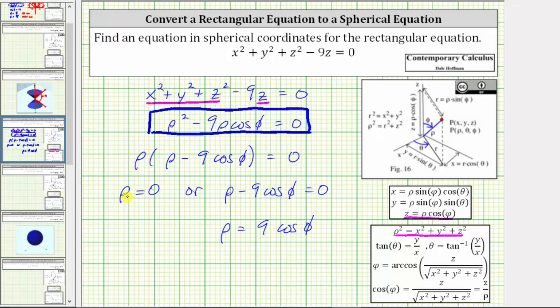So notice this equation here says rho must equal zero. Looking at this equation, rho is also equal to zero when phi is equal to pi over two, because cosine pi over two is equal to zero. And therefore, we don't need the equation rho equals zero in order to have a complete graph of the sphere.